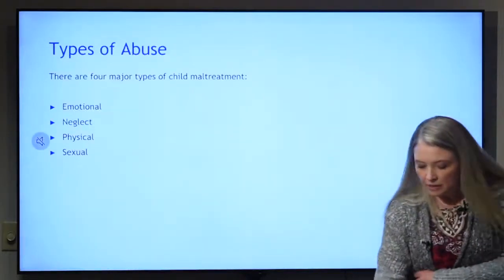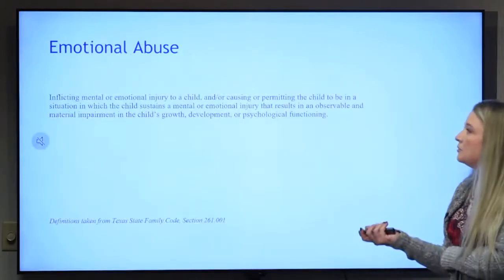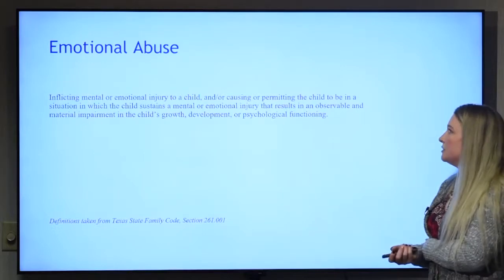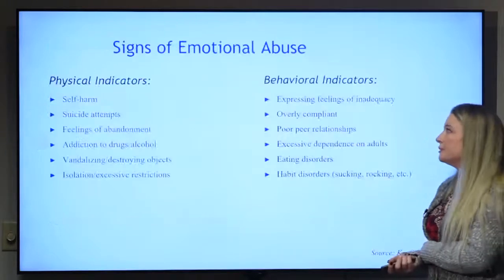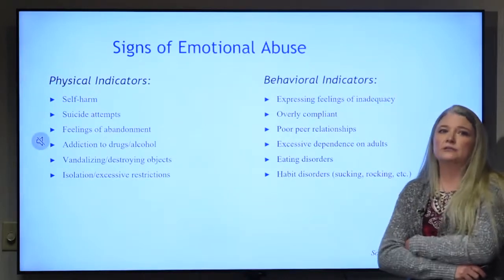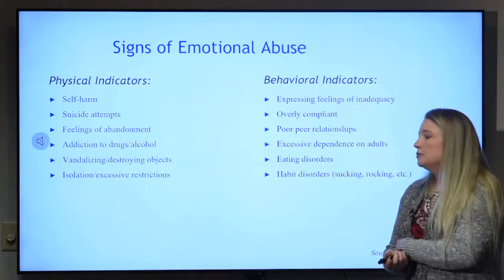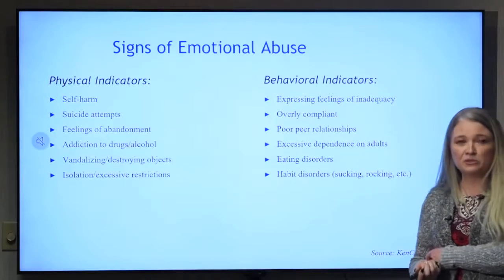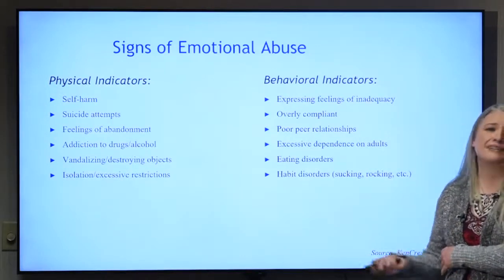Types of abuse include emotional, neglect, physical, and sexual. Emotional abuse is really hard to prove for law enforcement — it's inflicting mental or emotional injury to a child. It's sometimes longer lasting than physical abuse but one of the harder ones to prove. Signs can include self-harm, suicide attempts, feelings of abandonment, addiction, behavioral changes like being overly compliant, or having fights with friends.